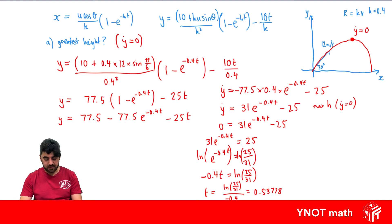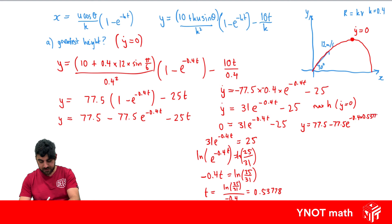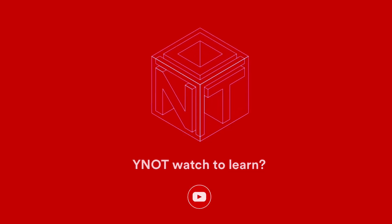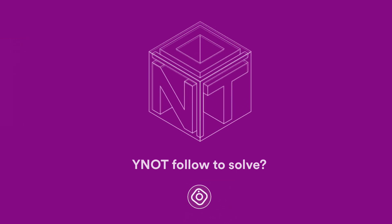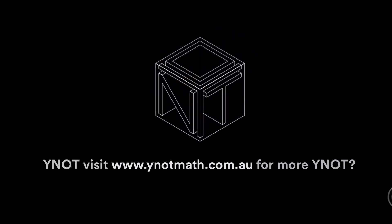This is the time at which the greatest height occurs, not the greatest height itself. To find the actual greatest height, we substitute t equal to 0.53778 back into our equation for y: y equals 77.5 − 77.5·e^(−0.4 × 0.53778) − 25 × 0.53778. Putting that into the calculator gives the greatest height of approximately 1.56 metres.